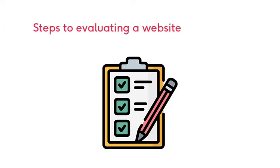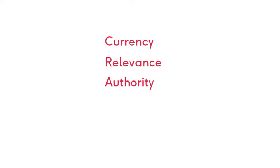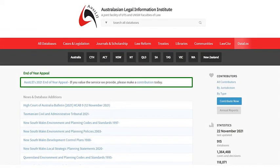Now we'll look at the steps you'll take to evaluate a website. How do you know that a website is credible? You should think about the currency, relevance, authority, accuracy and bias. Let's use this website as an example.